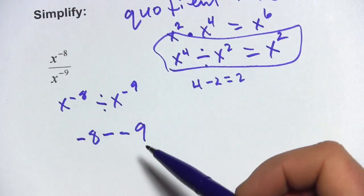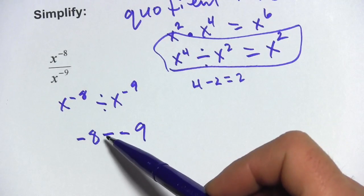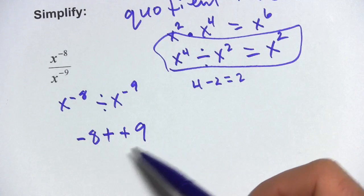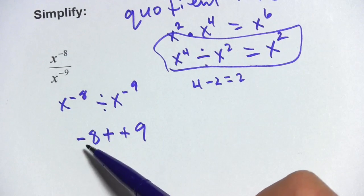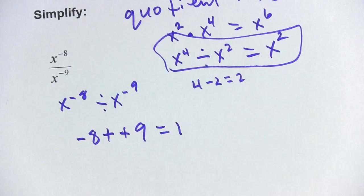It's a little confusing because of the signs here, but we can do this. So we've got negative 8 minus a negative ninth. Well, two negative signs in a row is like a plus sign. Subtract a negative, you're actually adding it. So negative 8 plus 9, that's going to be a positive 1.